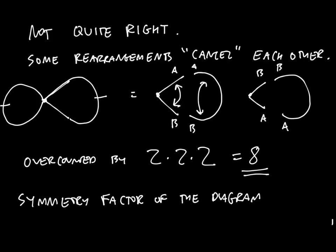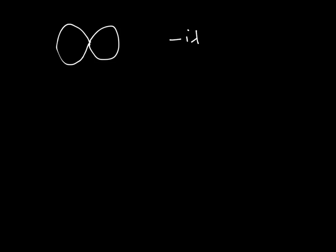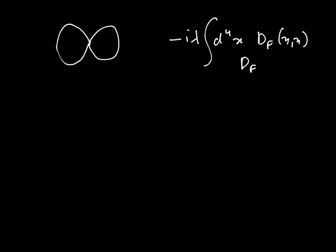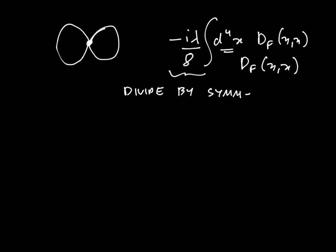The symmetry factor is typically called S. To calculate the full contribution of a diagram to the amplitude: first draw the picture, then use the Feynman rules to write down the amplitude — in this case, both propagators start and end at the point x, and you integrate over x with weight lambda — and then divide by the symmetry factor, which is 8 in this case. You will then get exactly the right answer for the Feynman diagram.